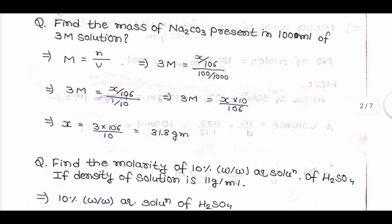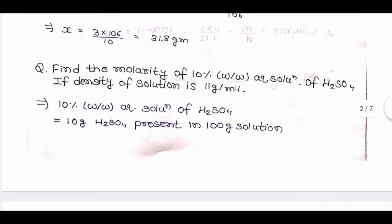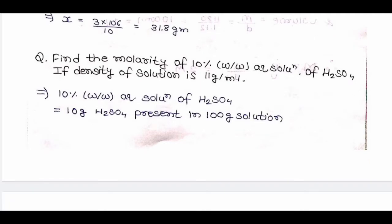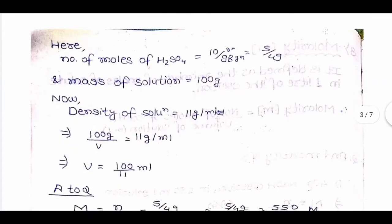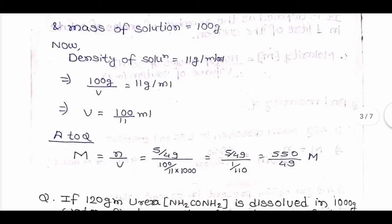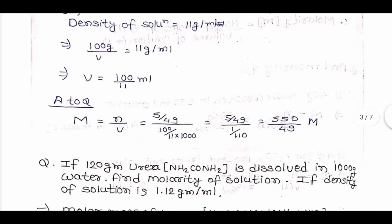Next question: find the molarity of a 10% weight-by-weight aqueous solution of H2SO4 if the density is 1.1 g/mL. A 10% w/w solution means 10 g H2SO4 in 100 g solution. Moles of H2SO4 = 10/98 = 5/49. Density = 1.1 g/mL implies volume = 100/1.1 mL. Molarity = (5/49) / (100/1100) × 1000 = 550/49 mol/liter.